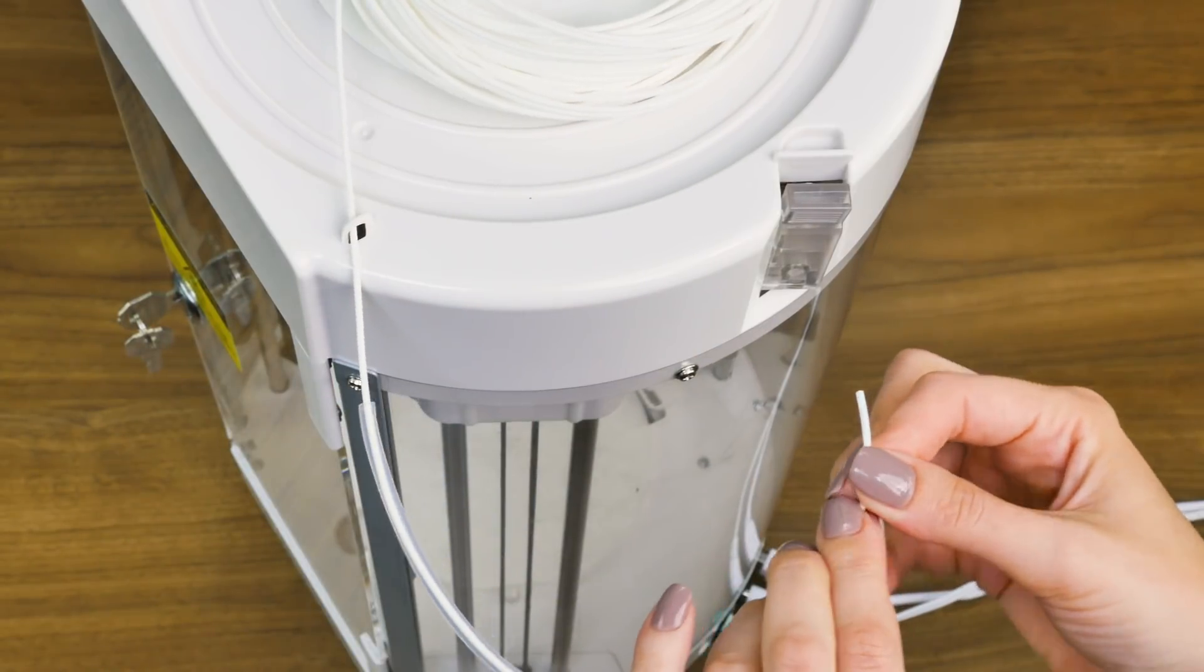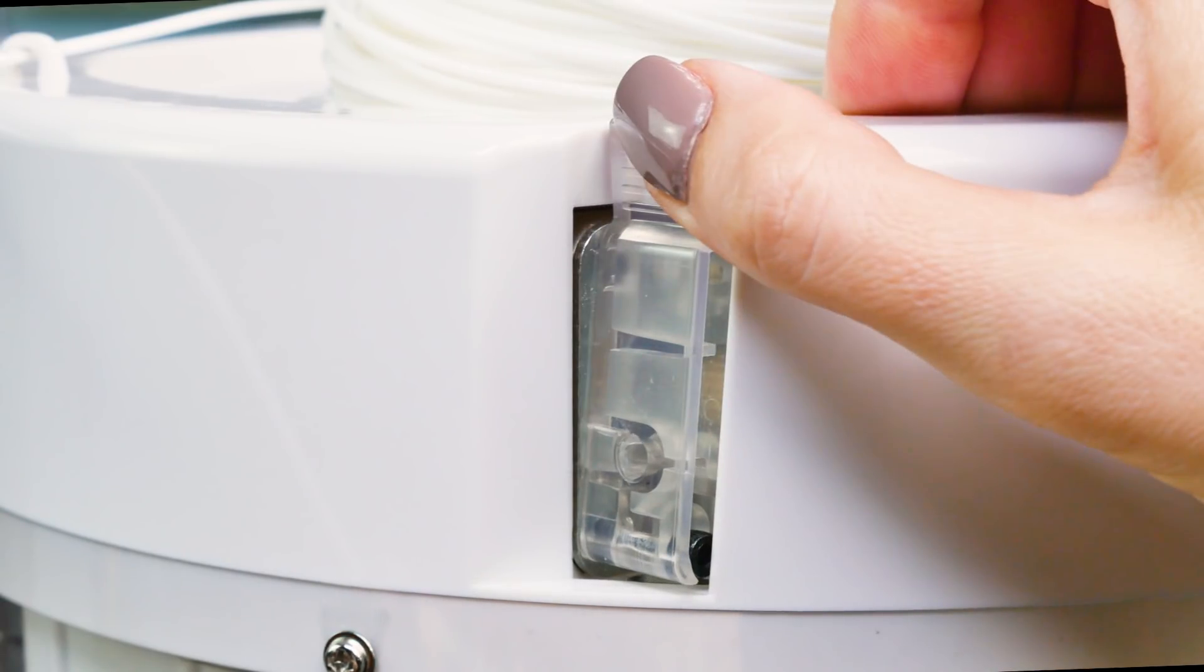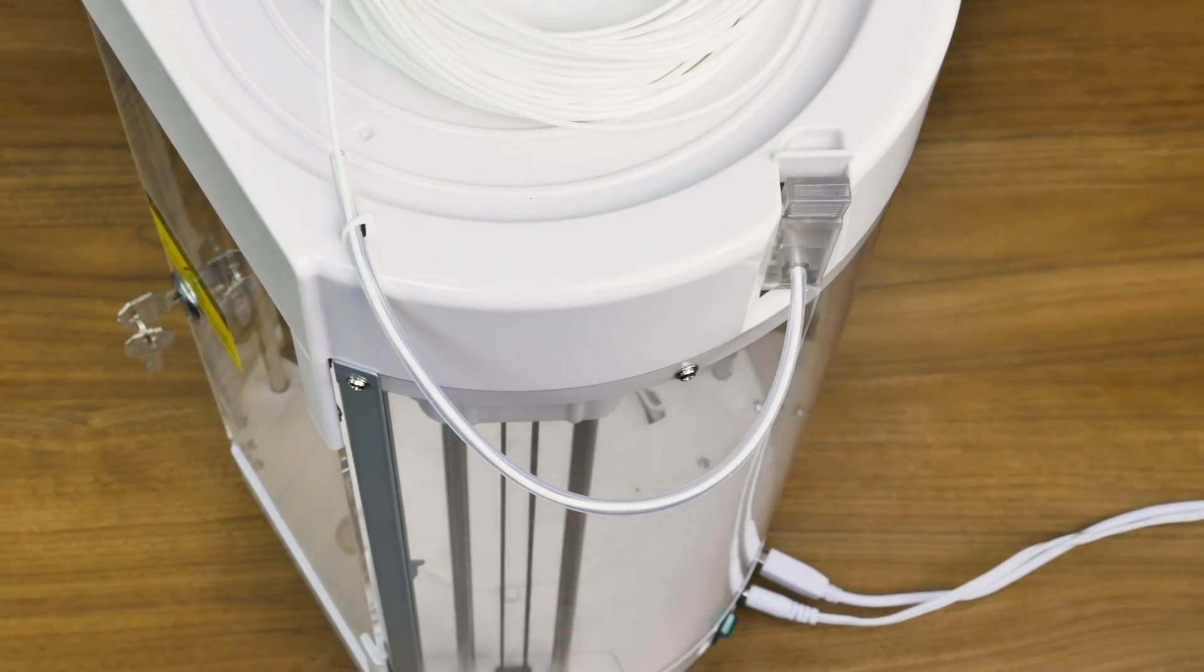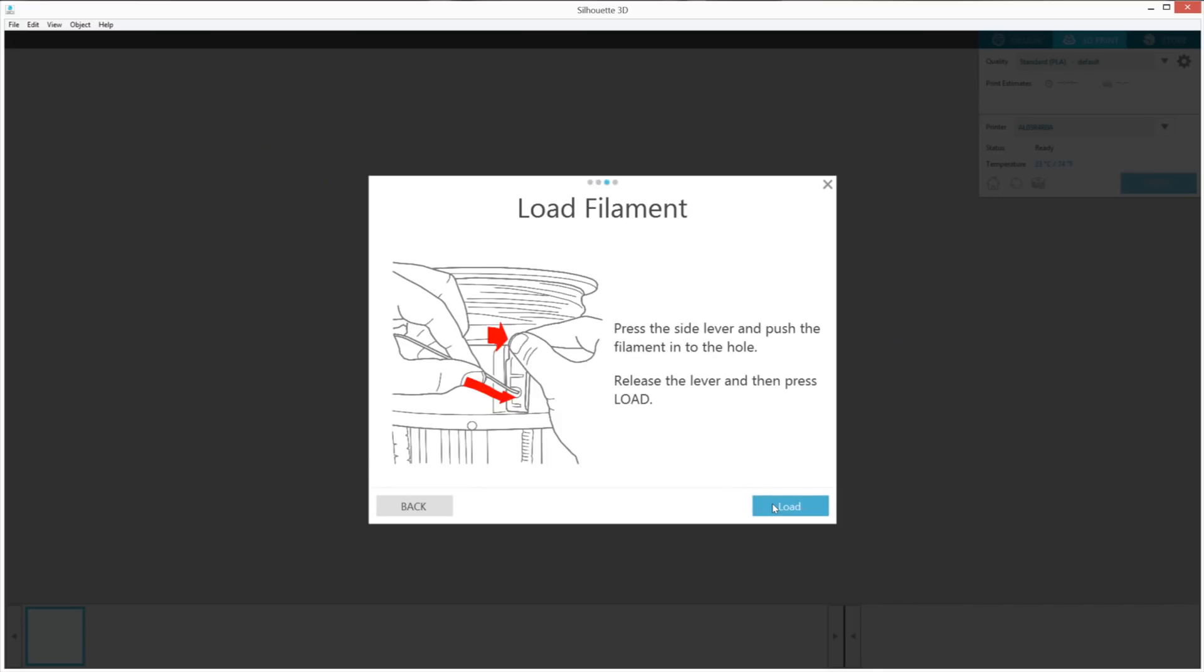This will help prevent the filament from becoming tangled and jamming the machine. Once the filament has been fed through the filament tube, press the tab on the filament clip to open the hole where you can insert the filament. You'll know it's completely inserted when the filament comes to a stop. Then release the clip. Click Next in Silhouette 3D and then click Load.